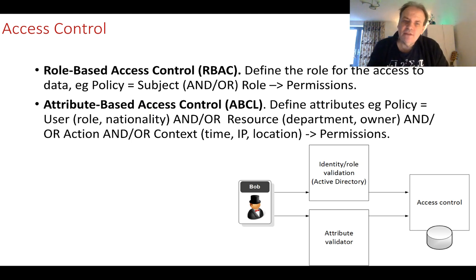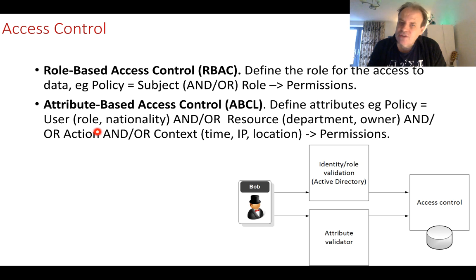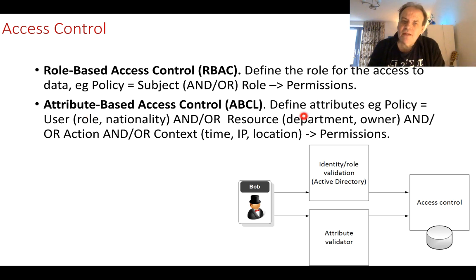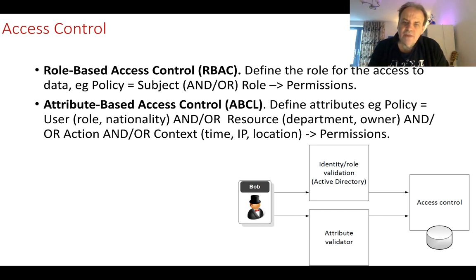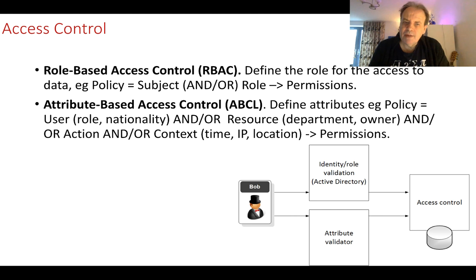Increasingly we're looking at attribute based access control. With this we can define a policy using any attribute about the user, the resource, any action they're performing, or within any context. So we can map these to permissions — for example, ensuring Bob has a certain role, is part of a department, is performing an execute-level action from a certain IP address — allowing us to write fairly robust policies. The key requirement is that these attributes are obtained in a trusted manner, properly signed by a trusted authority.